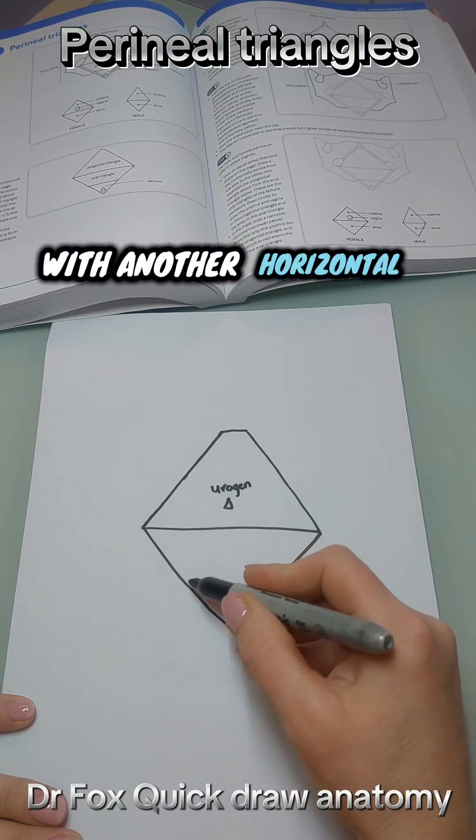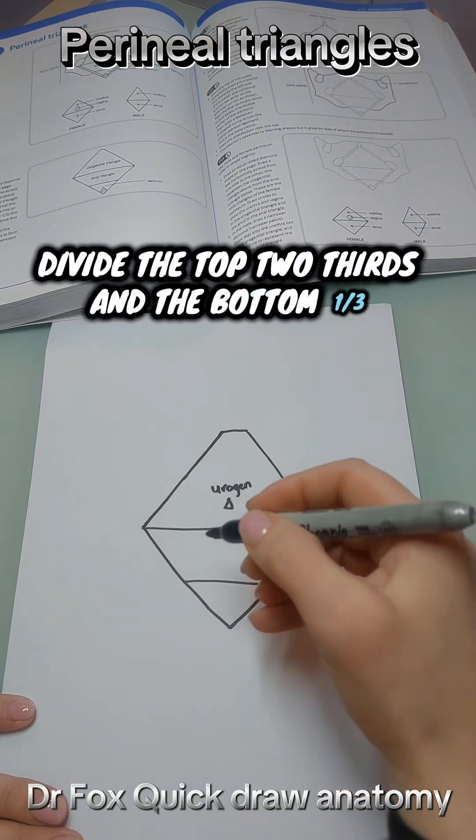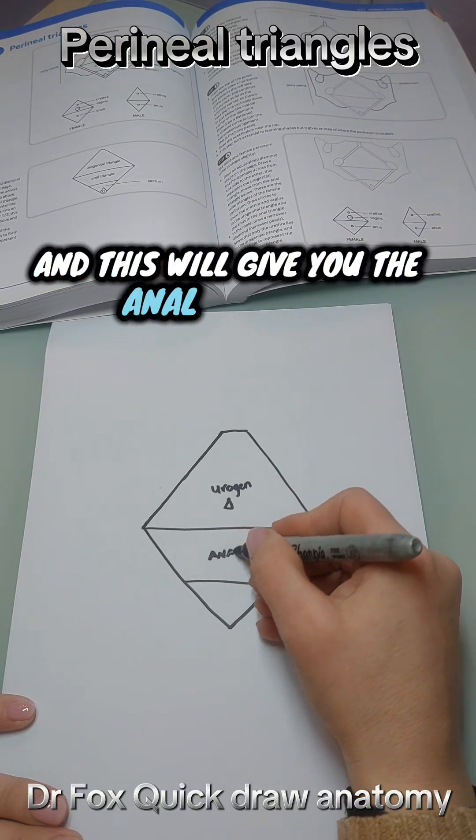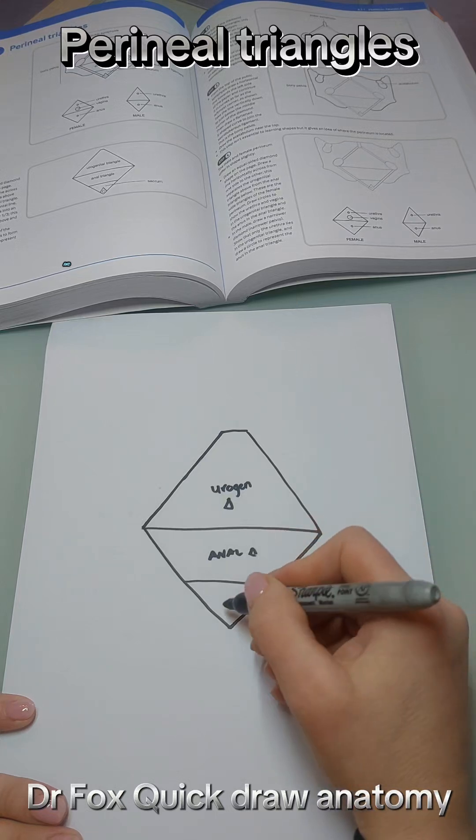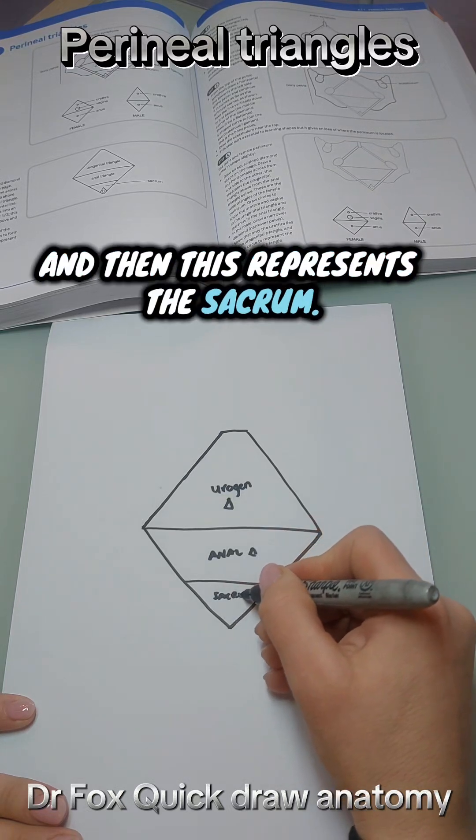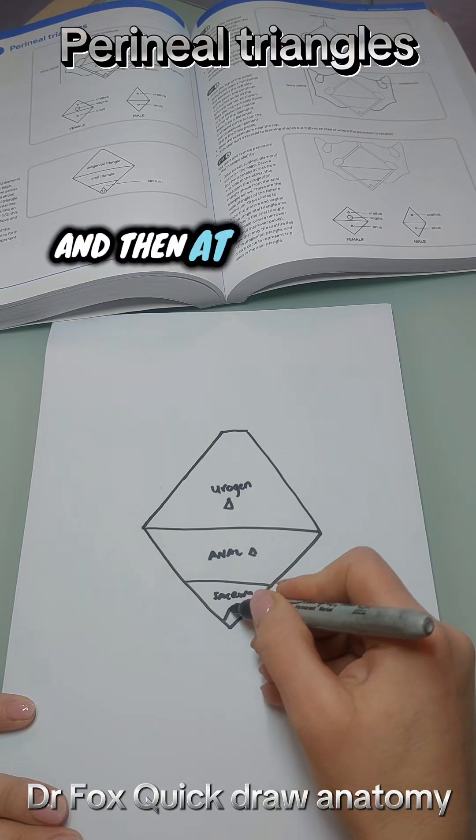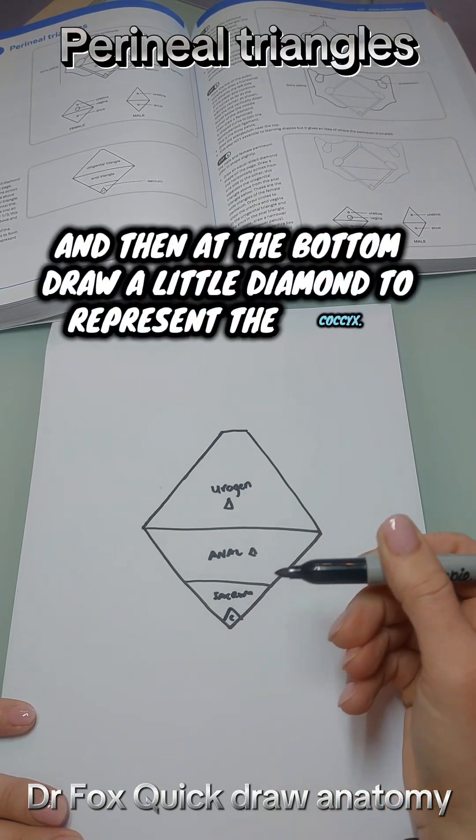With another horizontal line, divide the top two thirds and the bottom one third. This will give you the anal triangle. This represents the sacrum, and then at the bottom draw a little diamond to represent the coccyx.